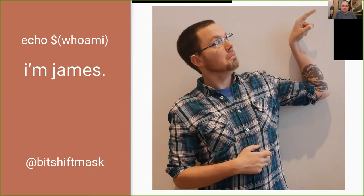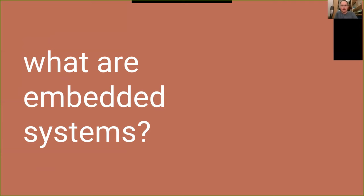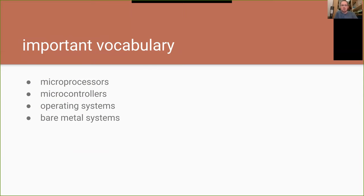So what are embedded systems? I wanted to explain this from a high level since people here have different programming backgrounds. There are a couple of pieces of important vocabulary. When you think of the CPU in your computer, you're probably talking about a microprocessor — a dedicated component that does computing really well but isn't totally integrated. It typically has things like RAM and persistent storage, like a hard drive, located off the CPU.